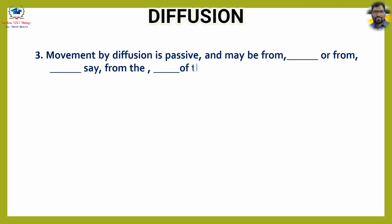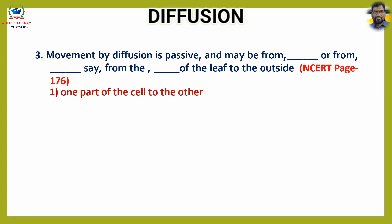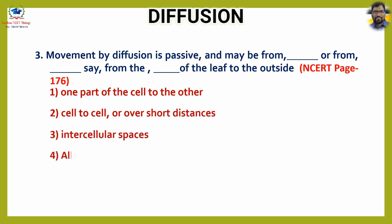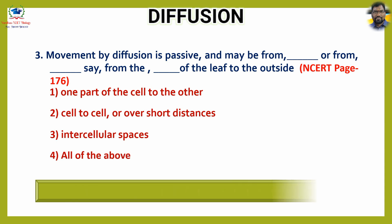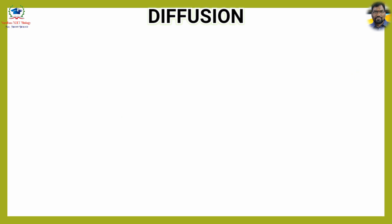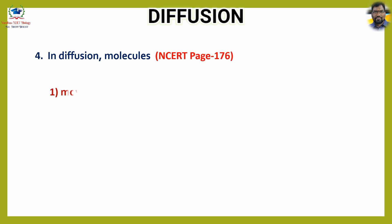Question number three: Movement by diffusion is passive and may be from one part of the cell to the other, or cell to cell over short distances, say from the intercellular spaces of the leaf to the outside. Options: one, one part of the cell to the other; two, cell to cell or over short distances; three, intercellular spaces; four, all of the above. The answer is option four, all of the above.